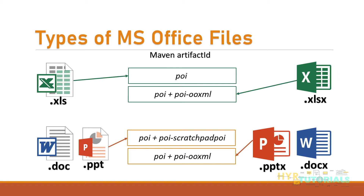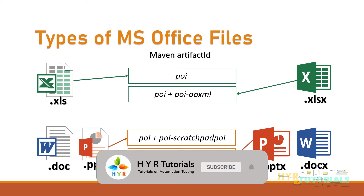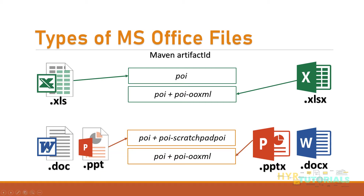There are two types of files in MS Office: older version files and newer version files. We differentiate these because when downloading and adding Apache POI JARs to our project, there are different JARs for each version — separate JARs for the older version and a different set for the newer version.